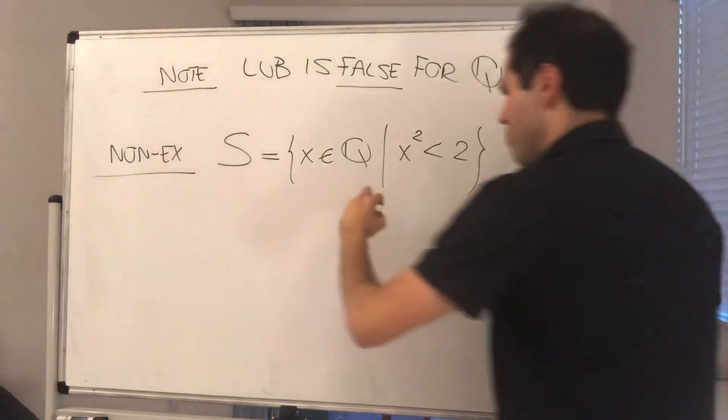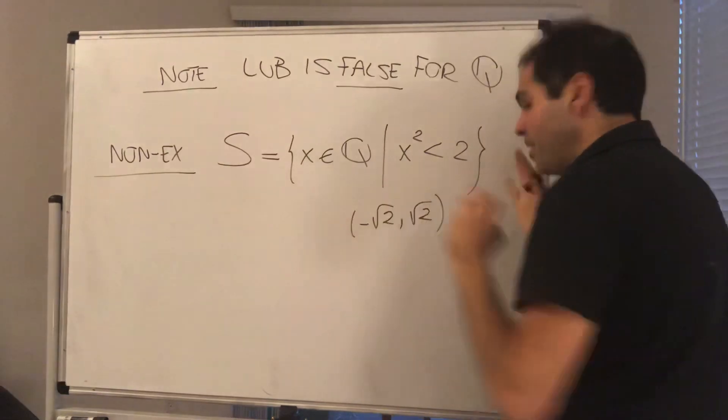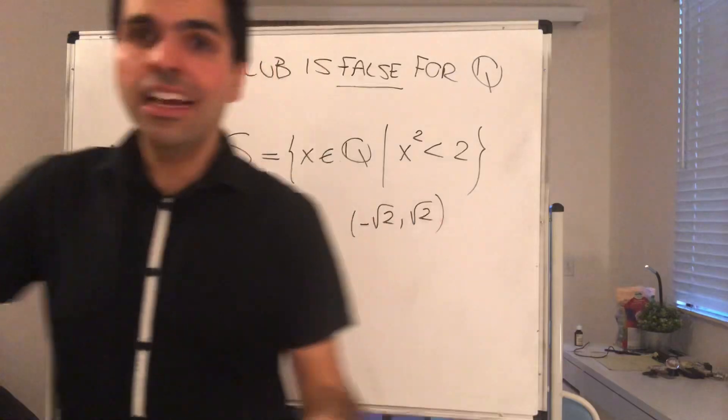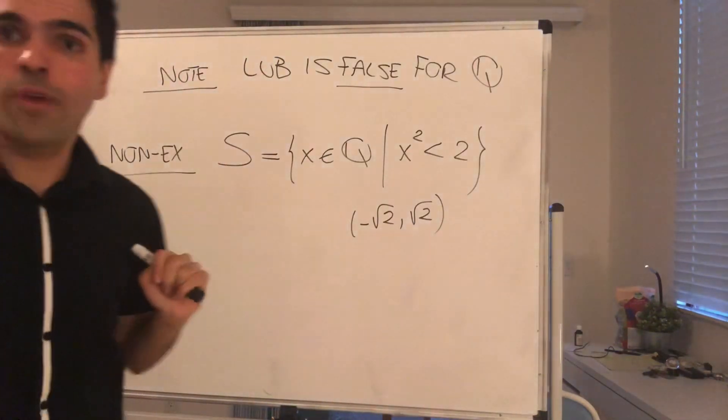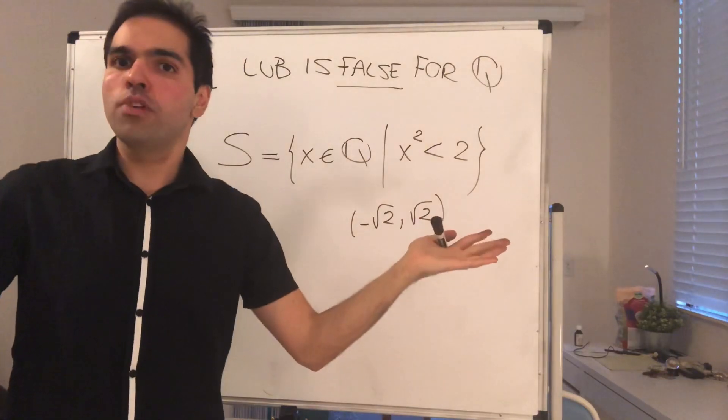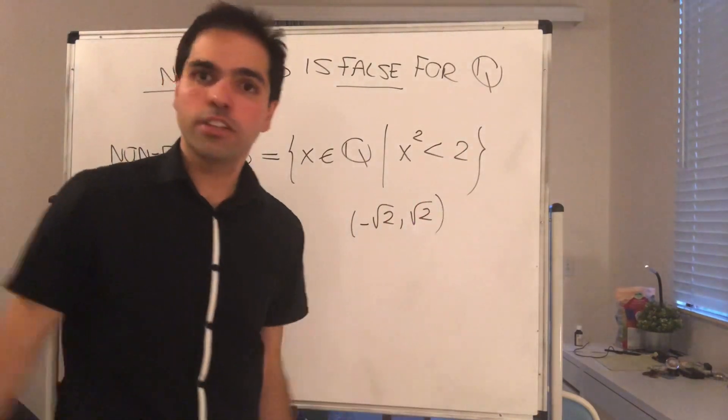So, essentially what this is, it is the interval minus square root of 2, comma square root of 2, but in the rational numbers. And now, for a second, pretend that our universe is just the rational numbers, and in particular we do not know what a real number is. So, square root of 2 in our universe is just complete gibberish.